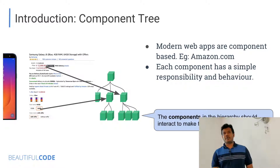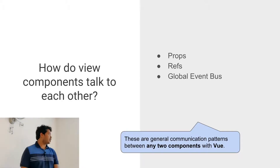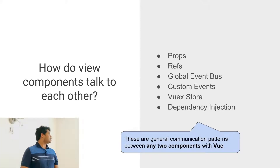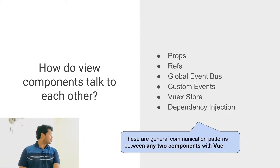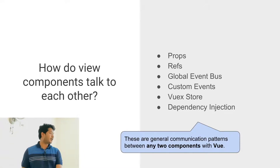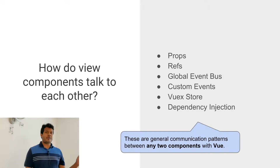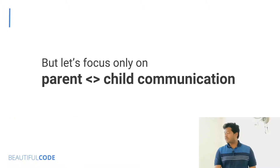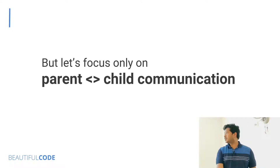Communication is very important between all components. The various ways components can talk to one another in web frameworks include props, refs, global event bus, custom events, Vuex store, and dependency injection. These are Vue-specific but similar to React — for example, dependency injection is similar to React's Context API. Today I'm going to focus only on parent-child communication patterns.